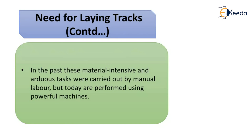The good functioning of a railway track depends on individual components such as rails and sleepers — defective parts must be replaced in good time to avoid high costs. In the past, these material-intensive and arduous tasks were carried out by manual labor, but today they are performed using powerful track laying machines.